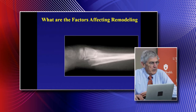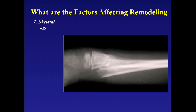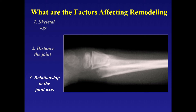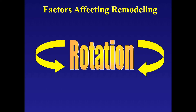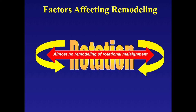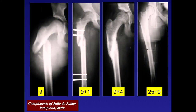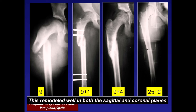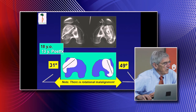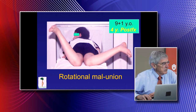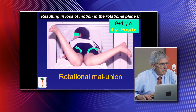What factors affect remodeling? First, how old the patient is. Second, how close to the joint—nearest to the physis. Third, the relationship to the joint axis—remodeling is stimulated when in alignment with the joint axis. Remember, there is very little rotational remodeling. Here's a good example: a patient with a fractured femur showed good remodeling in the sagittal and coronal planes, but they did not correct the rotational angulation—about 18 degrees of difference—and that resulted in some loss of rotational motion.